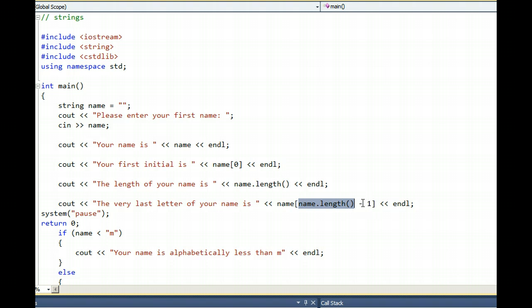Subtract one from it because arrays always start at position zero and a string is really just an array of letters. And by putting all that in the square brackets, it very compactly, efficiently, always is guaranteed to print out the last letter of any name.